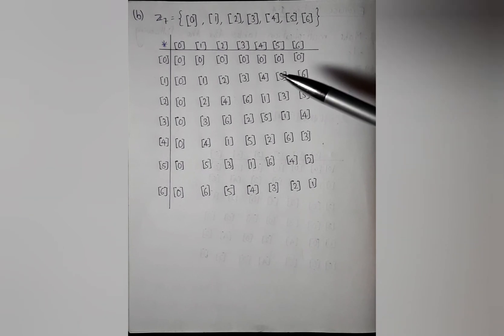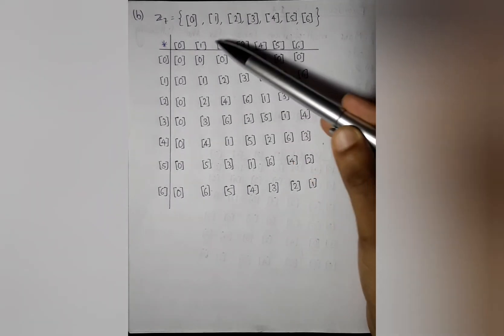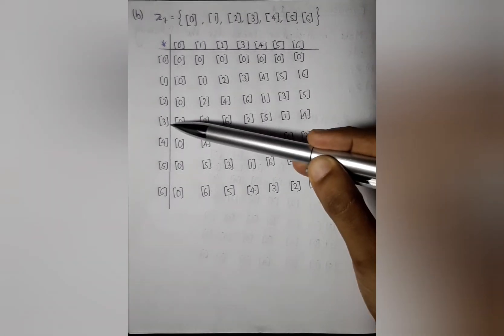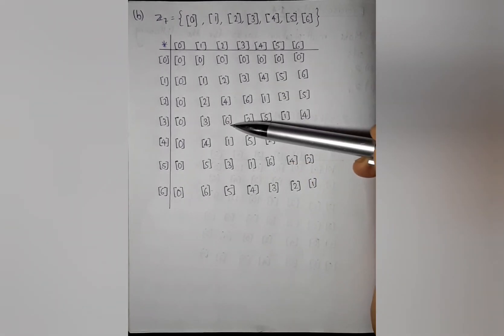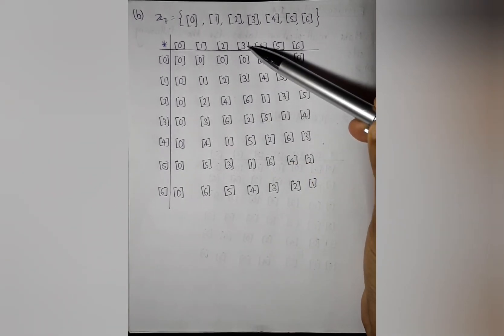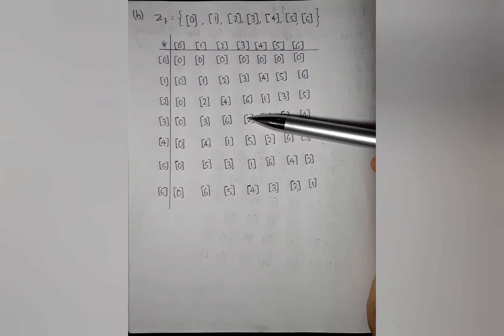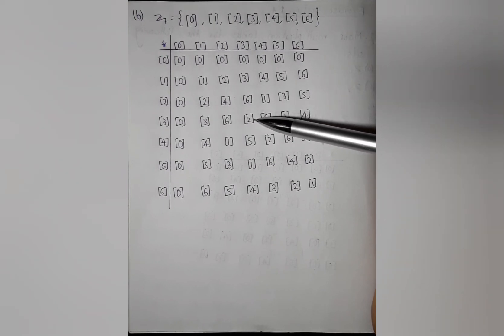Let's check. 3.1 is 3, 3.2 is 6, 3.3 is 2. Actually 3.3 is 9. And when divided by 7, we get the remainder 2. So we can write 2 modulo.